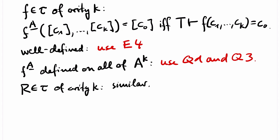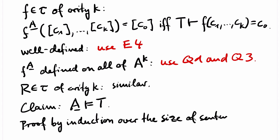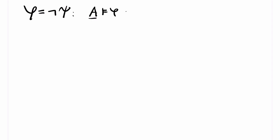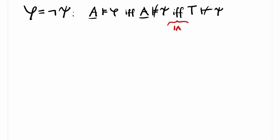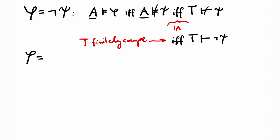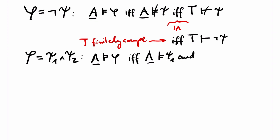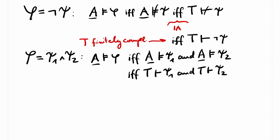The relations of A are defined similarly, and that's the entire construction. We claim that A is indeed a model of T. Our proof is by induction on the size of sentences. If φ is of the form ¬ψ, then A ⊨ φ if and only if A does not model ψ, if and only if ψ has no formal proof in T by inductive assumption, which in turn holds if and only if ¬ψ has a formal proof in T by finite completeness. If φ is of the form ψ₁ ∧ ψ₂, then A ⊨ ψ₁ ∧ ψ₂ iff A ⊨ ψ₁ and A ⊨ ψ₂, which by inductive assumption is equivalent to ψ₁ having a formal proof in T and ψ₂ having a formal proof in T. One can show that this holds if and only if ψ₁ ∧ ψ₂ has a formal proof in T — I leave this as an exercise.